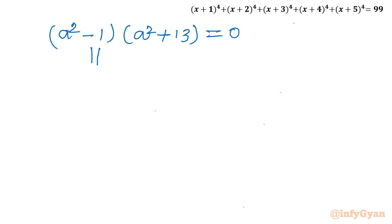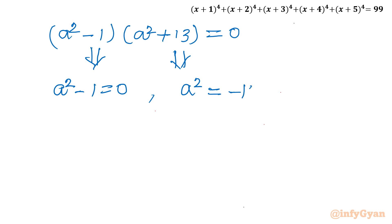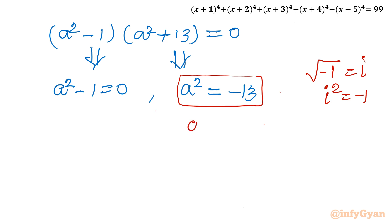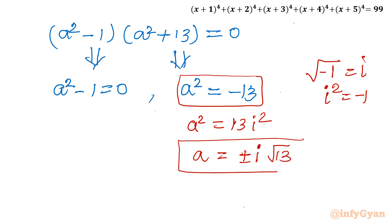From (a² − 1) = 0 we get a² = 1, so a = ±1. From (a² + 13) = 0 we get a² = −13. Since the square root of −1 is i, we write a² = 13i², so a = ±i√13. These give the complex solutions.